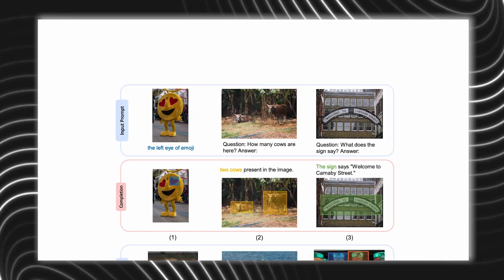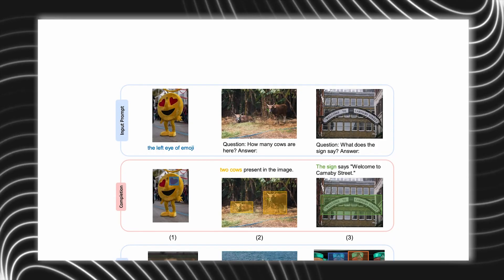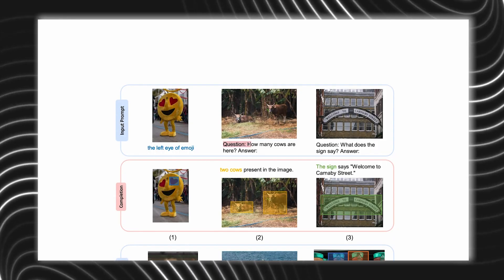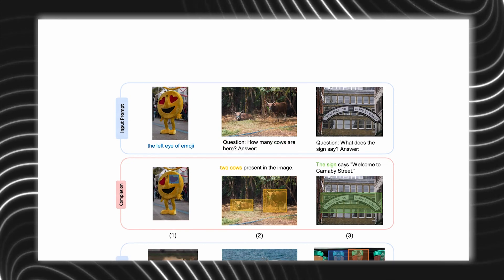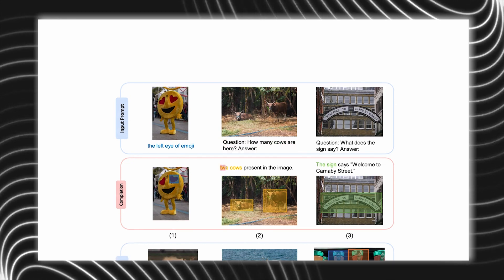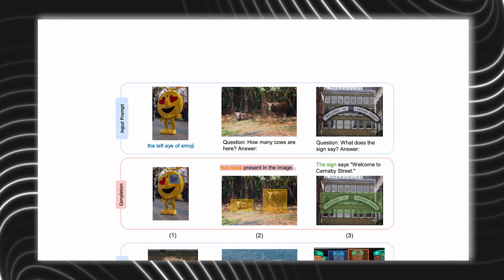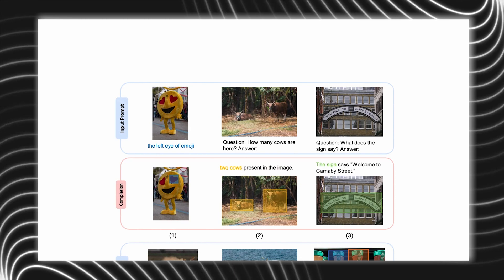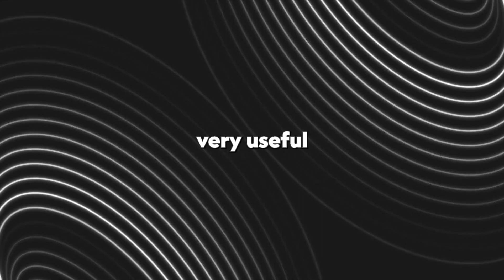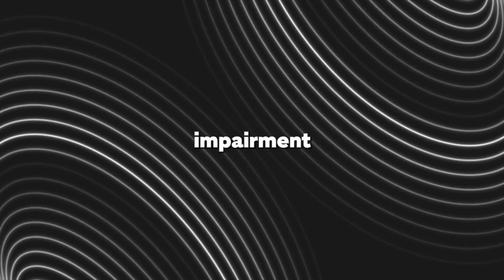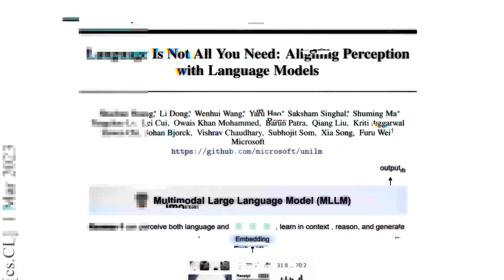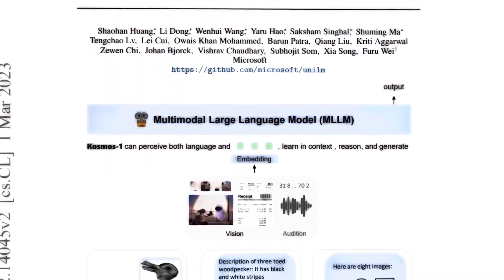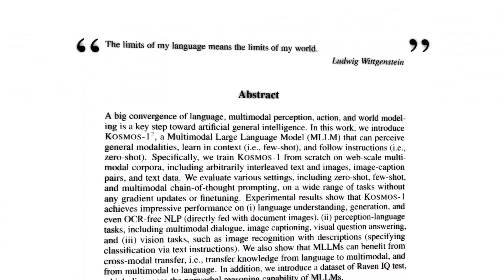The next two prompts ask about the number of cows and what the sign says. Cosmos 2 not just marks the objects, but answers the question as well, outputting the sign's contents and telling us that there are two cows in the image. This could be very useful for people suffering from visual impairment, or just understanding what it is you're looking at — imagine if this was paired with something like a Microsoft equivalent to Google Lens.